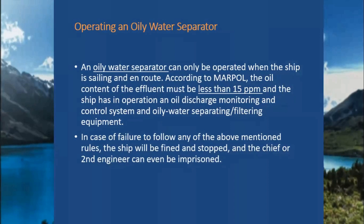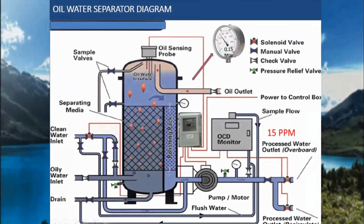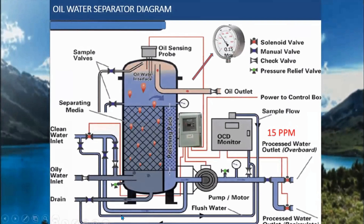The oily water separator can be operated when the ship is sailing in route. The oil content of the effluent must be less than 15 ppm, and the ship must have in operation an oil discharge monitoring and control system and oily water separating and filtering equipment. In case of failure to follow any of the above mentioned rules, the ship will be fined and stopped, and the chief or second engineer can be imprisoned.